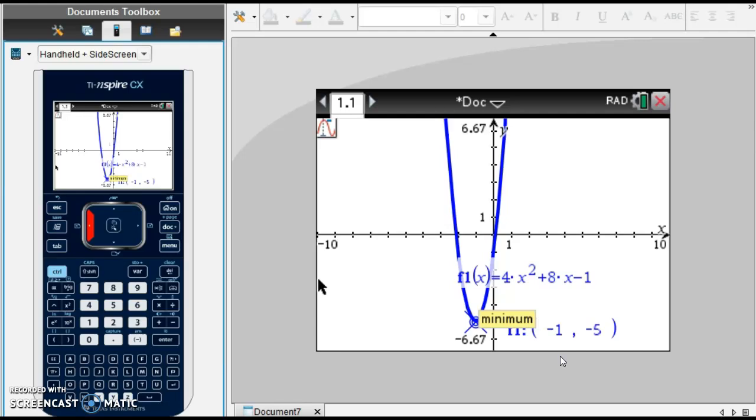The axis of symmetry is the vertical line that goes right through the vertex. The vertical line that's going to go right through here. If you remember, vertical lines are all in the form x equals. My negative 1 is my x value, so the equation for the axis of symmetry is x equals negative 1.